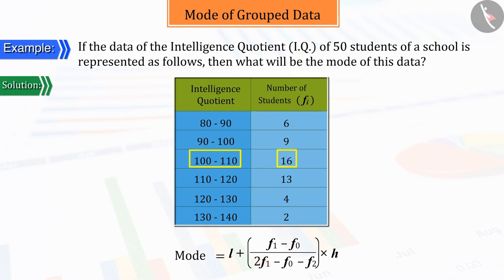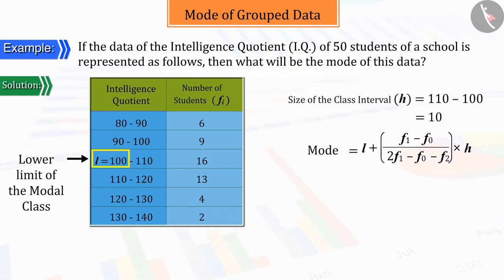From the above table, we can tell that the lower limit of the modal class is 100. The size of the class interval is 10. The frequency of the modal class is 16. The frequency of the class just before the modal class is 9, and the frequency of the class that follows immediately is 13.